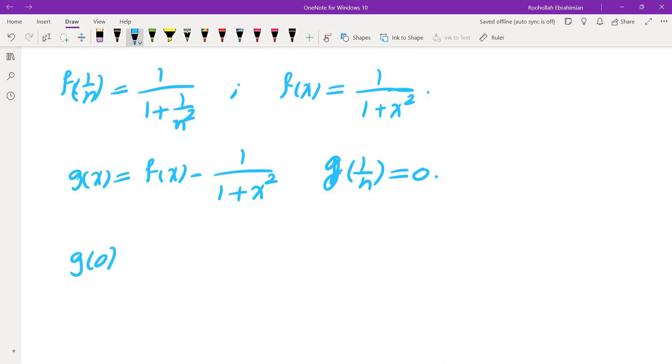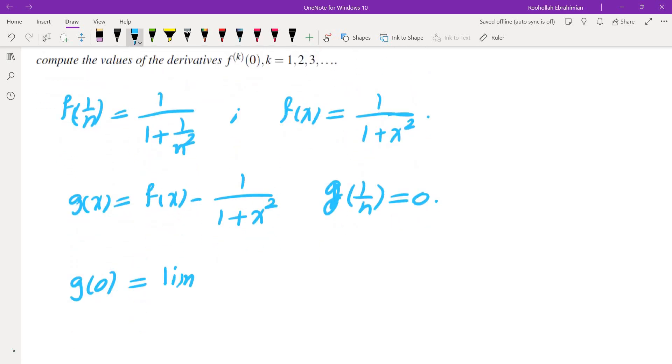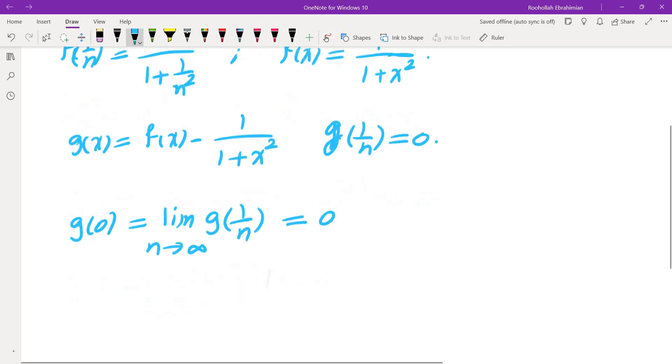First of all g of 0, that would be like basically the zeroth derivative. Since g is continuous it would be the limit of g of 1 over n and g of 1 over n is 0 so that means g of 0 is 0.